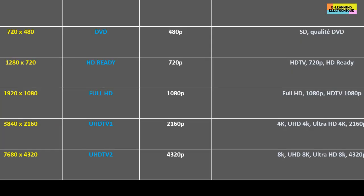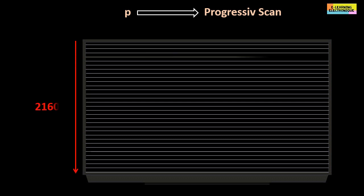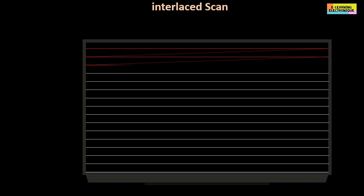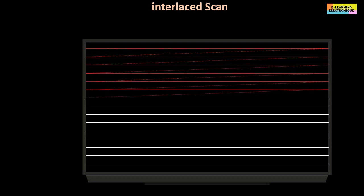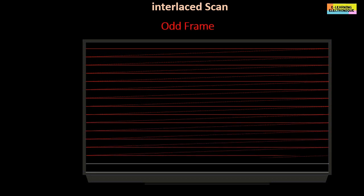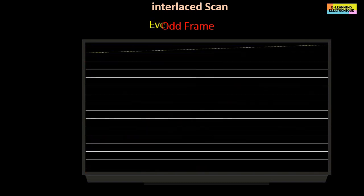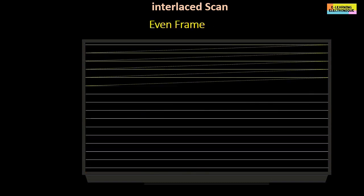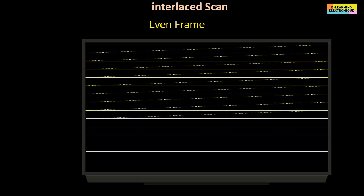We will now see what the letter P in lowercase following the pixel height count corresponds to. There are two display technologies for lines on a screen. The P mode stands for progressive scan, where lines are displayed one by one. The other mode is an older technology called interlaced, used in cathode ray tube televisions, where the screen is scanned by an electron beam splitting the image into odd and even frame images. The quality is better with progressive scan; the drawback of interlaced mode was that it sometimes gave the appearance of a duplicated image.